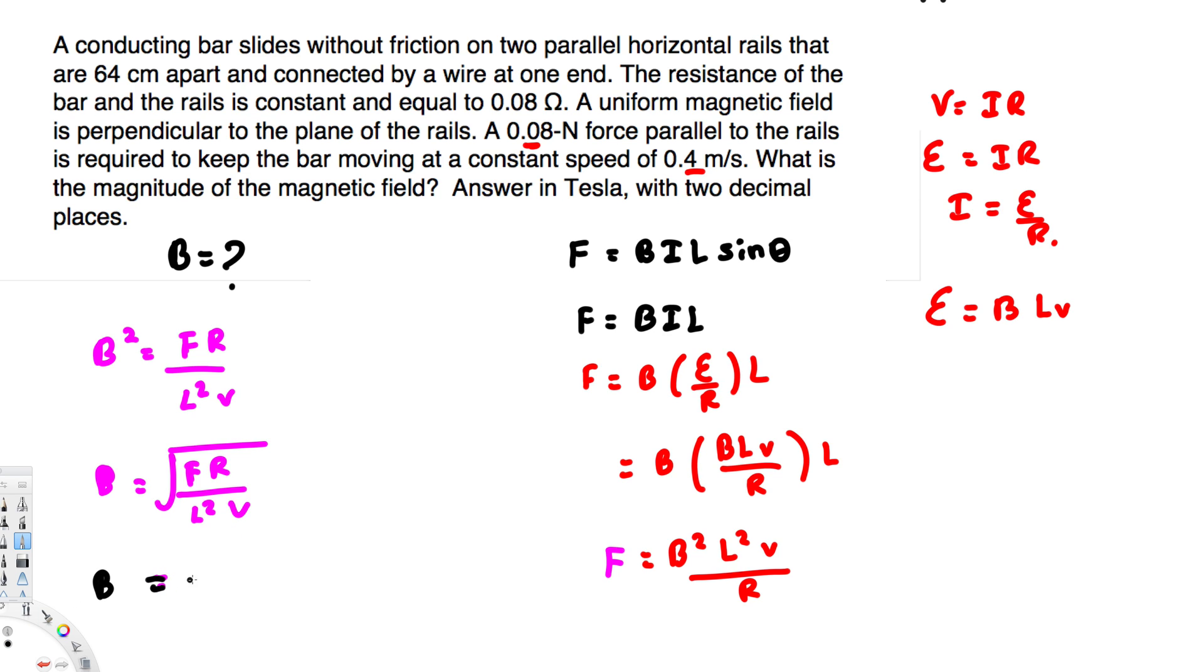B is going to be equal to the square root of F, the force, that is 0.08 newton, times the resistance R, that is 0.08. And the apart distance, that is 64 centimeter. And 64 centimeter is equal to 64 times 10 to the power minus 2 meters. And then we have to square this one. After that, we have the velocity that is 0.4 meters per second. And if you calculate this one, you will end up with 0.1976.